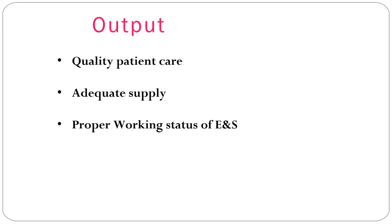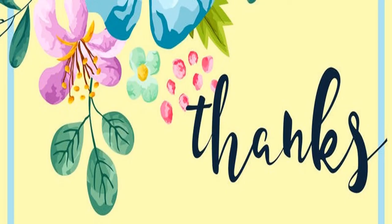The third role is in relation to output. If the nurse manager successfully carries out duties in the input and process phases, the three results produced are: quality patient care, adequate supply of equipment and supplies, and all materials in the unit being in proper working status. This concludes the video on supply of equipment and supplies in the nursing unit.